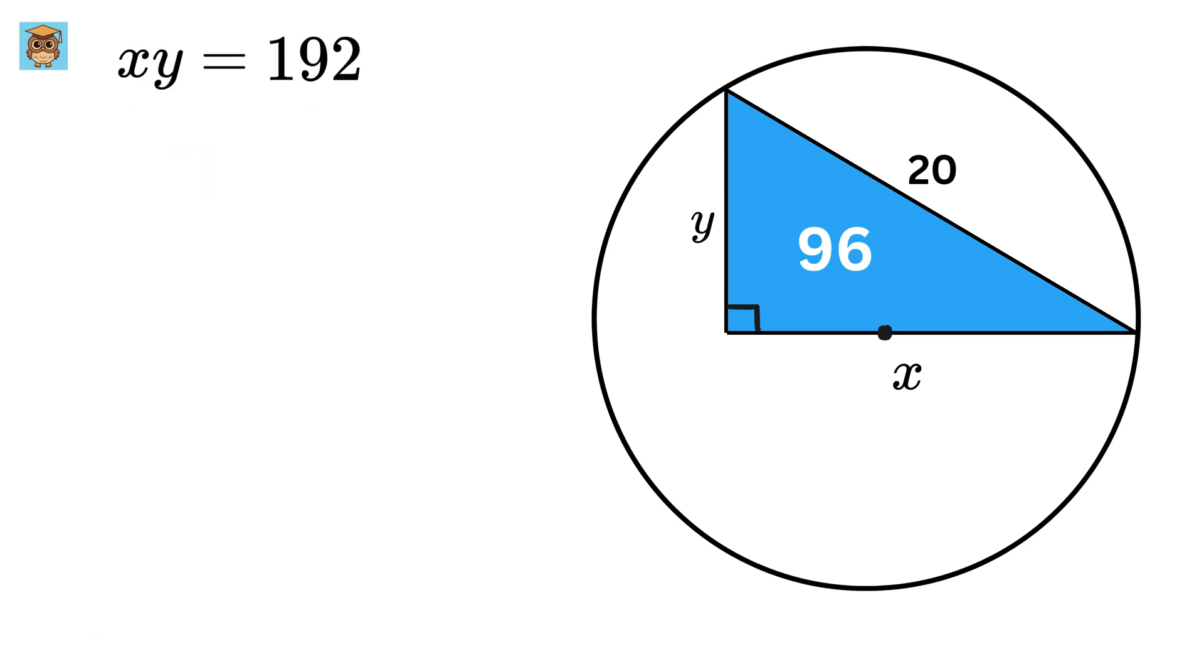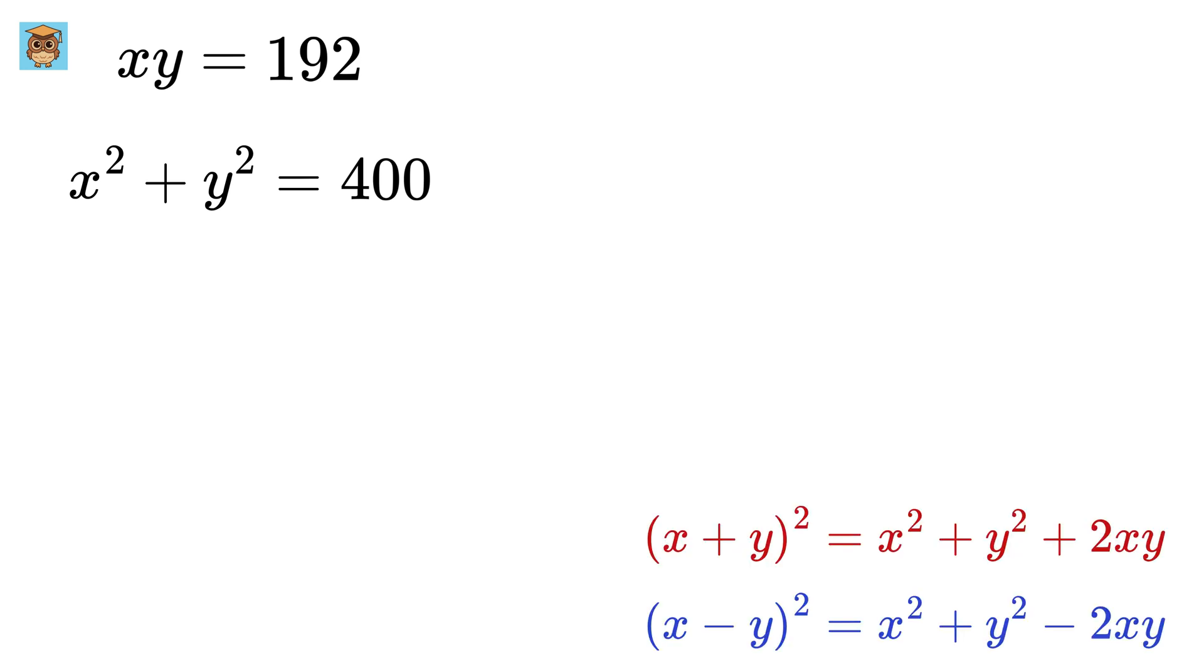Now, let us use our favorite right triangle theorem. x squared plus y squared equals 20 squared, or 400. Now, we will use these two famous equations to make the math simpler.